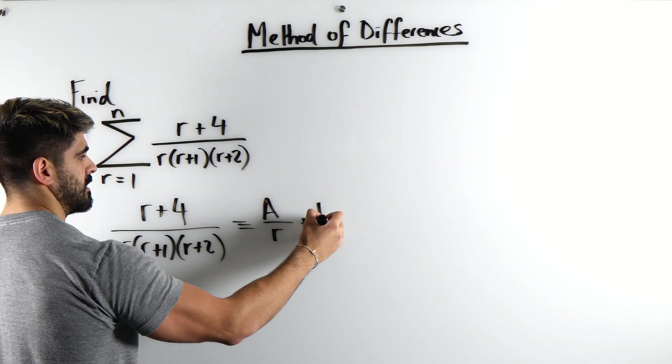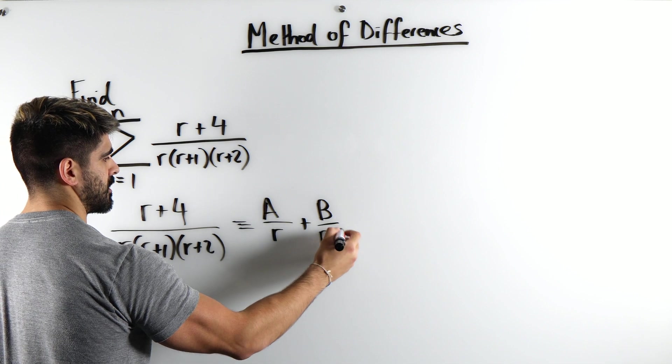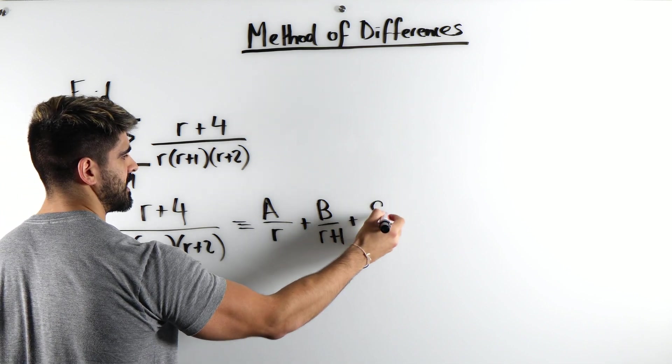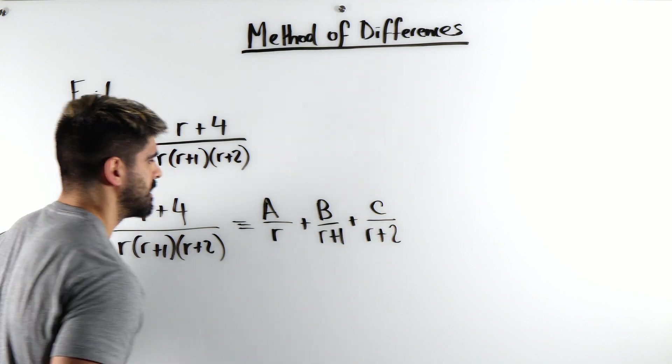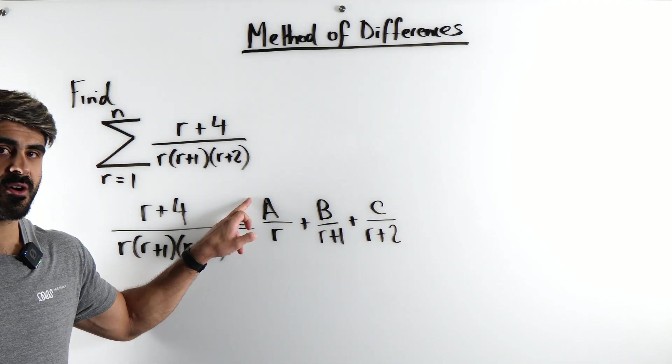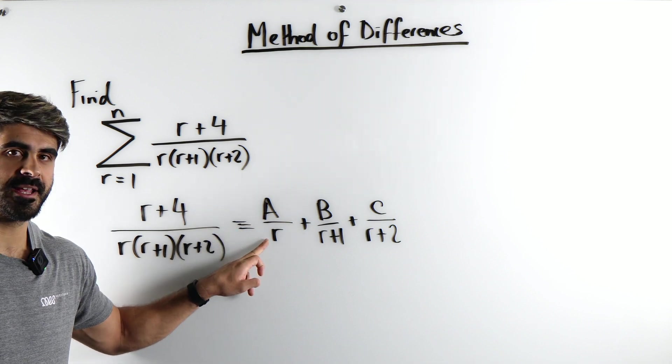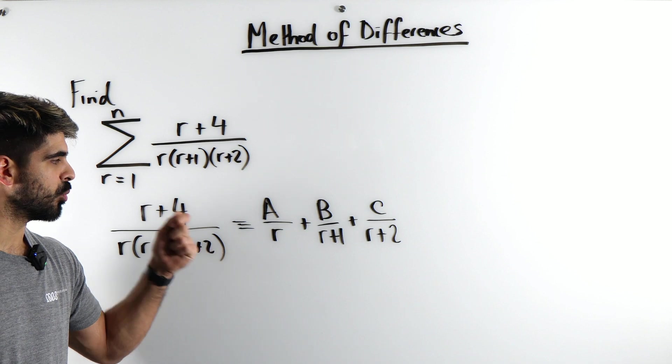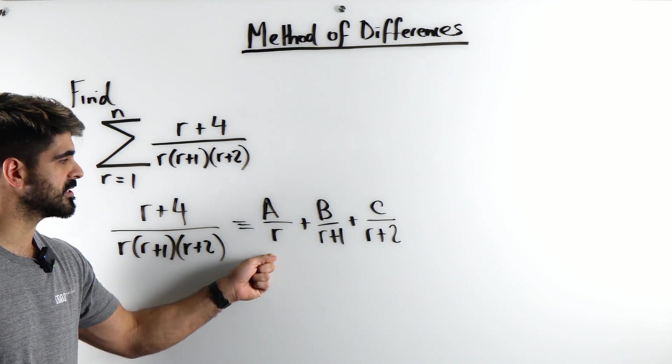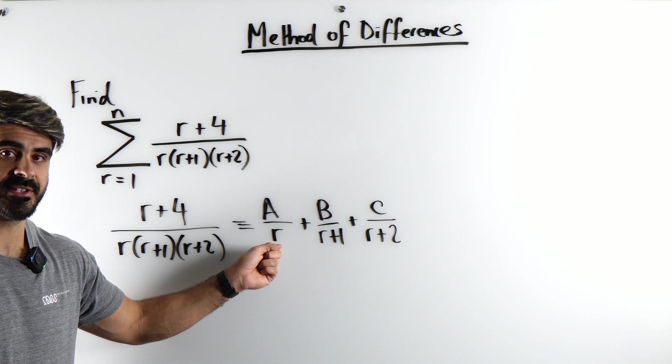So we're going to have A over r, B over r plus 1, and then C over r plus 2. Now what's the trick? If you want to work out A, you look at the denominator and you say what value of r would make the denominator 0? In this case it is 0.